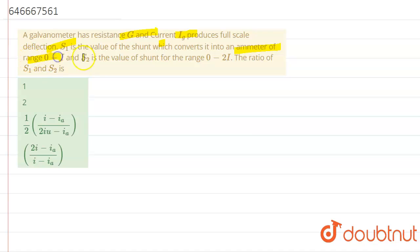of range 0 to I and S2 is the value of the shunt of the range 0 to 2I, the ratio of S1 and S2. So we have to find the ratio of S1 and S2.